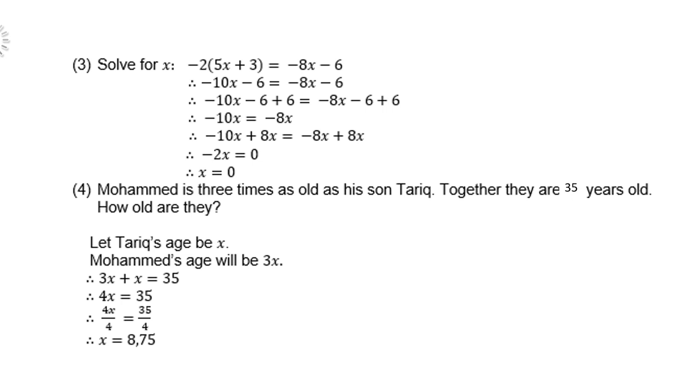So there you are, 3x, which is Mohammed's age, plus x, which is Tariq's age. Together they're 35. So therefore 4x = 35. Divide both sides by 4. And therefore x = 8.75.